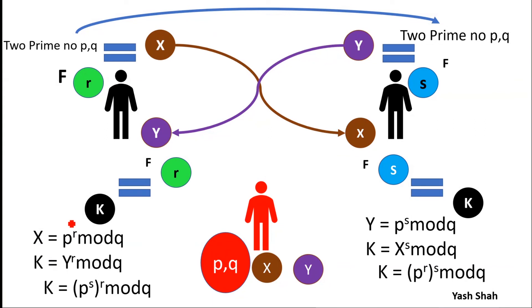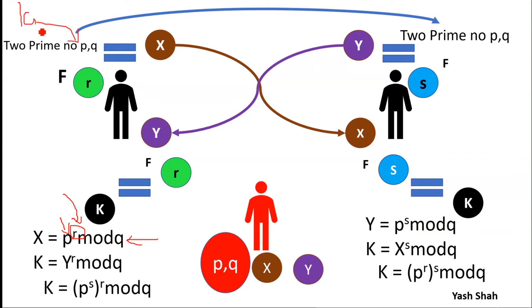Now the question is: why prime numbers? Because extracting the value of r becomes very difficult when two large prime numbers are used in the modular arithmetic.